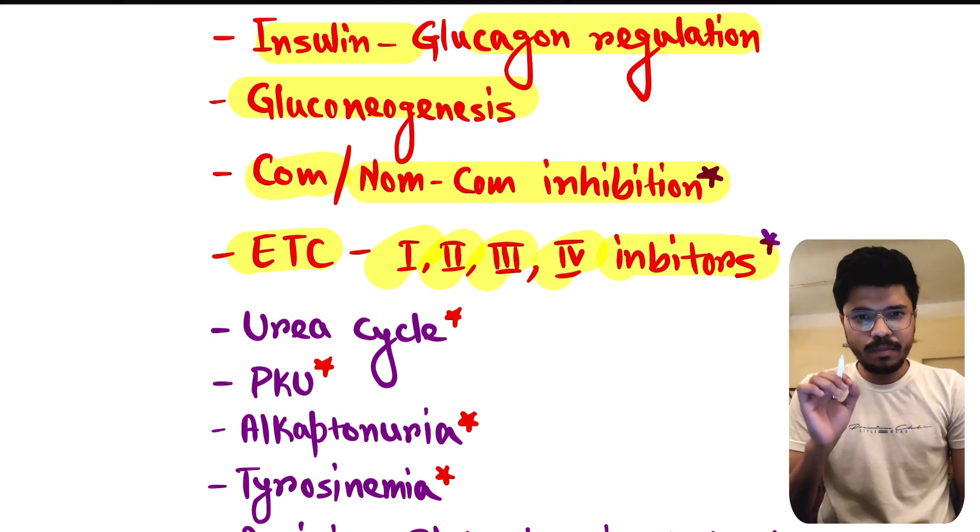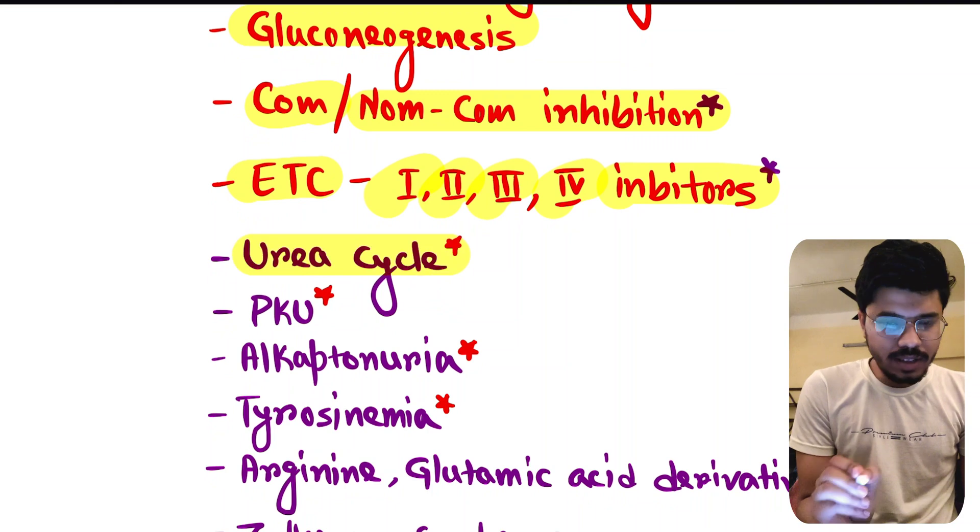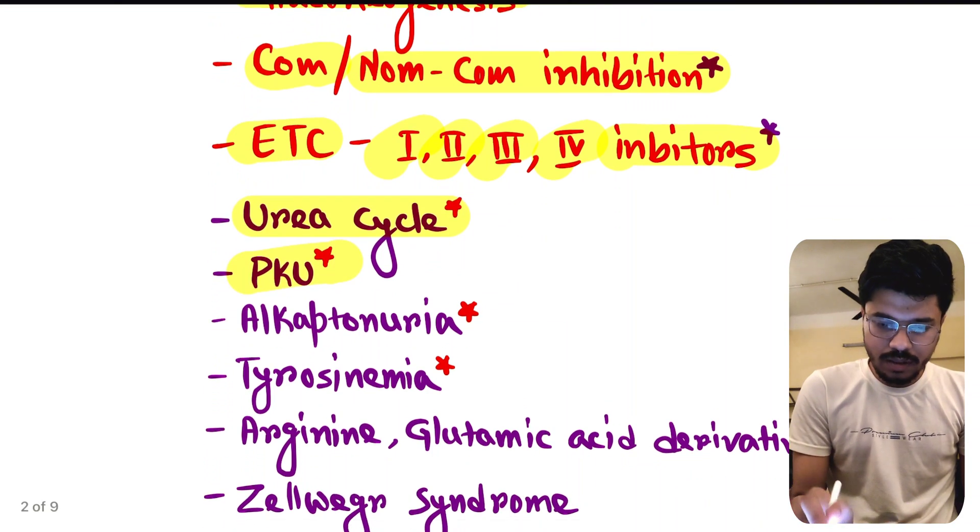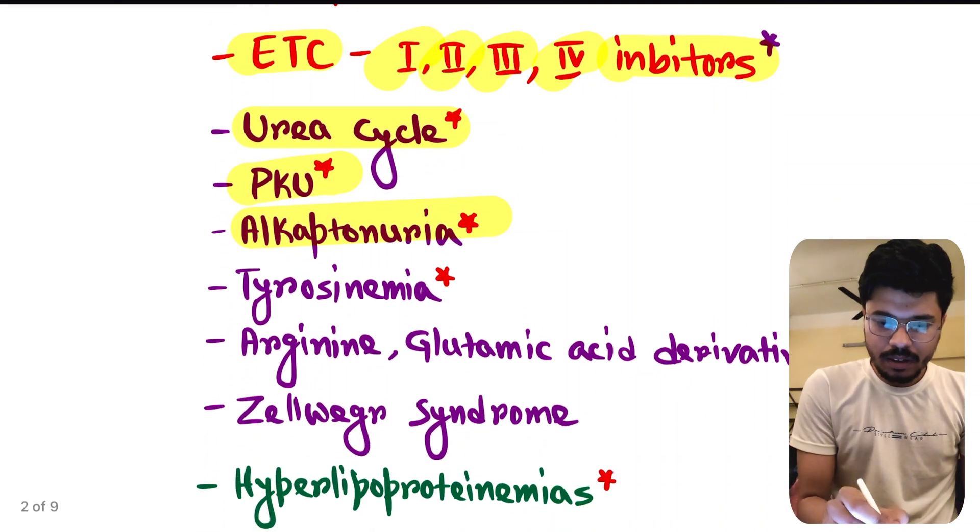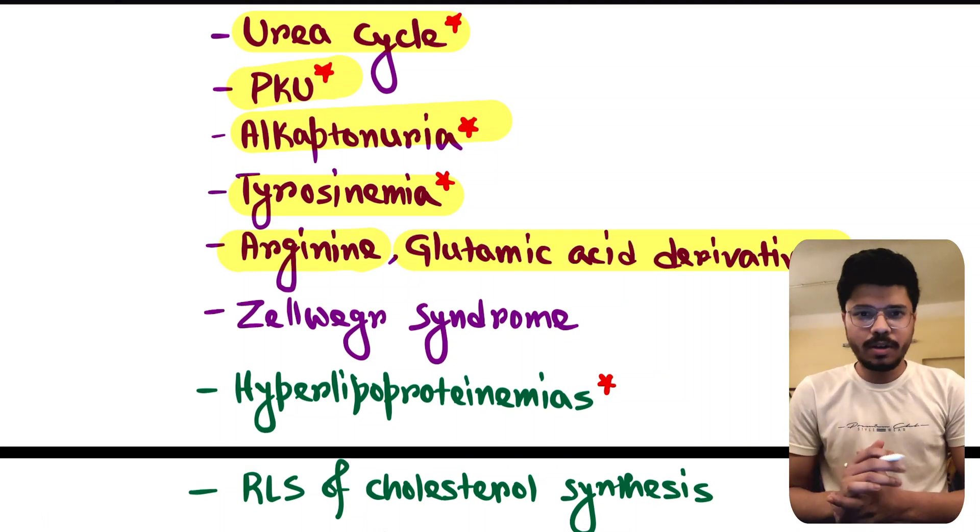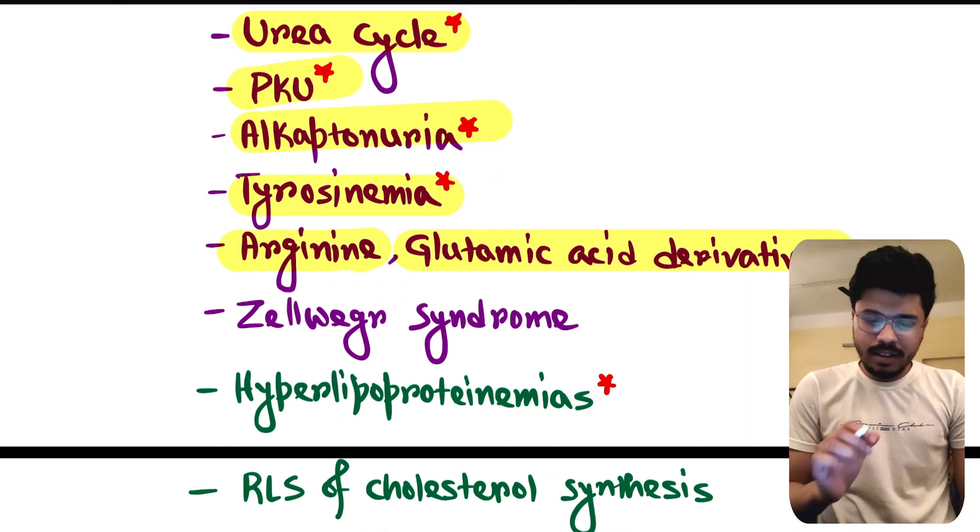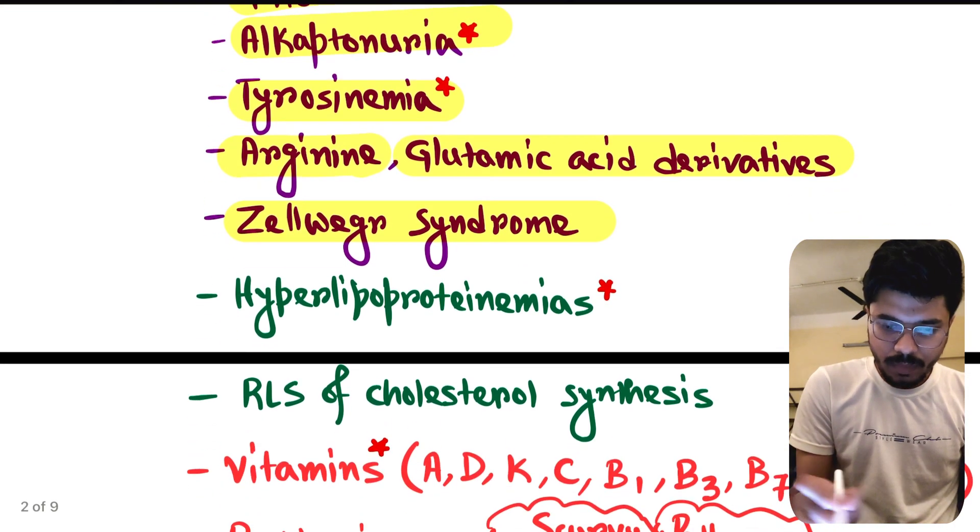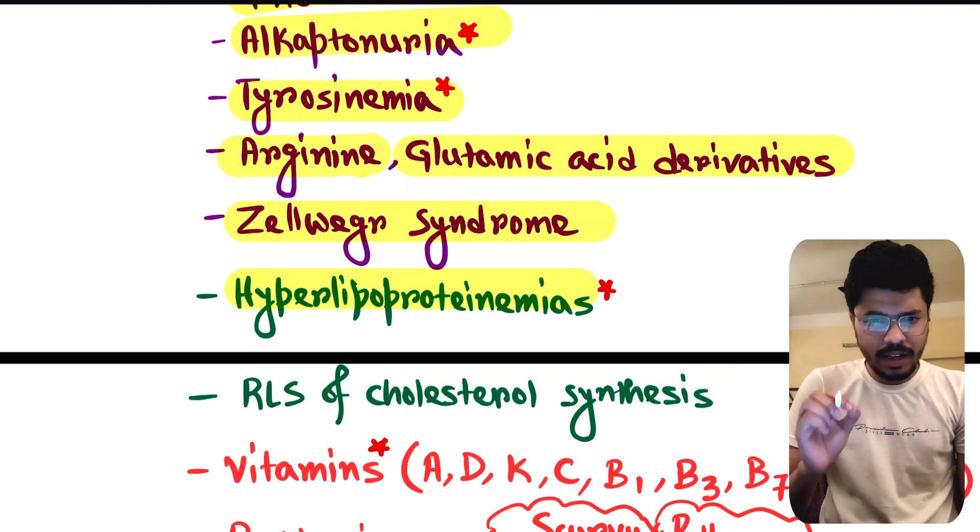Urea cycle, phenylketonuria, alkaptonuria, tyrosinemia, arginine, glutamic acid derivatives. All amino derivatives are important but at least you cannot skip arginine glutamic acid derivatives. Zellweger syndrome, hyperlipoproteinemia, these are extremely important.